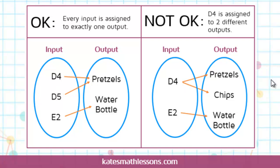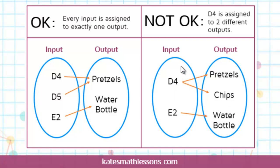If you look at this other mapping, if I entered the code D4, it says I'd get either pretzels or chips. This means there's something wrong. In order to be a function, if you enter the same code, you should get the same thing every time. So if I enter D4, I can only get one thing out. This input value has been assigned to more than one output value, so this one is not a function.